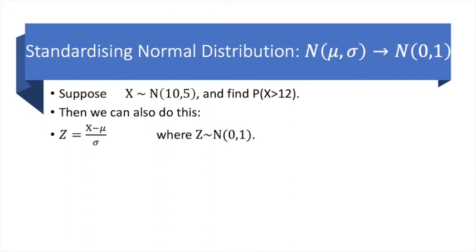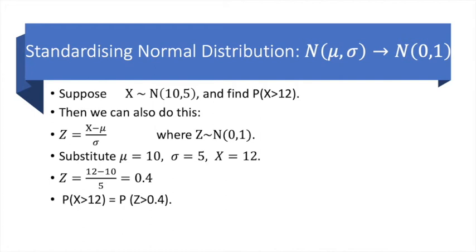We rewrite the formula from the last slide and substitute mu equals 10, sigma equals 5, and X equals 12. Then we compute and the Z score turns out to be 0.4. Therefore, the probability of X being greater than 12 is the same as probability of Z being greater than 0.4. The next question though is how do we compute that probability?